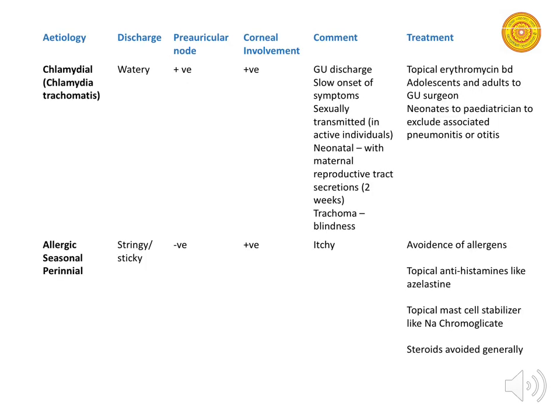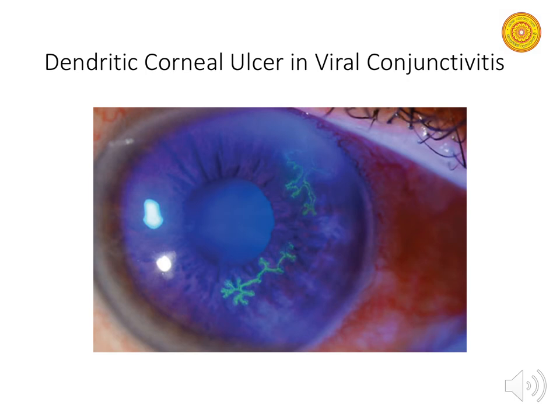Chlamydial infections can be reviewed on the slide as they are self-explanatory. Allergic conjunctivitis can be seasonal or perennial. The discharge is bilateral and very sticky; there can be slight blurring of vision due to the discharge, and the eyes are usually itchy. Management involves avoiding allergens and using topical antihistamines like azelastine and topical mast cell stabilizers like sodium cromoglycate.